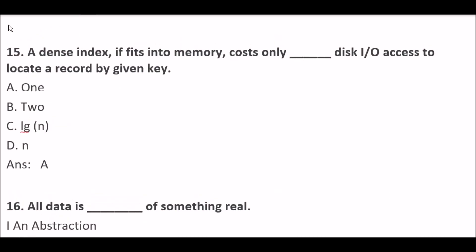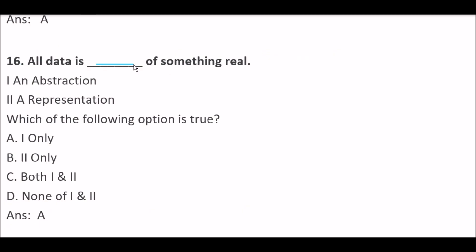A dense index, if it fits into memory, costs only blank space disk input/output access to locate a record by a given key. Option A: One. Option B: Two. Option C: log n. Option D: n. Right answer is Option A — One. A dense index, if it fits into memory, costs only one disk I/O access to locate a record by a given key.